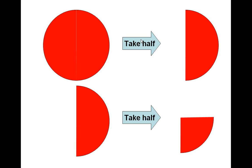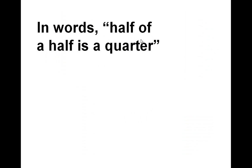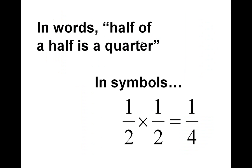You can do that just by coloring in some shapes on a piece of paper. Now, writing that in symbols, or in words, half of a half is a quarter. And then in symbols, we've got half times a half equals a quarter.